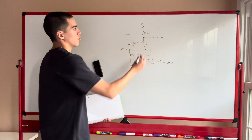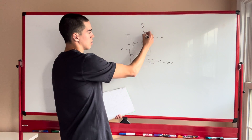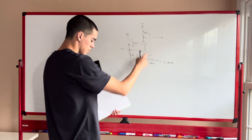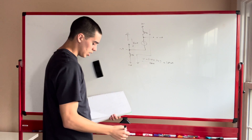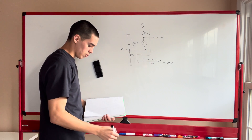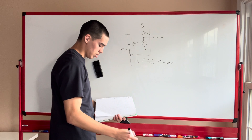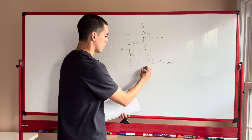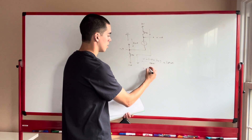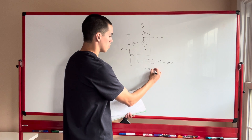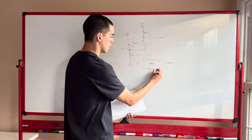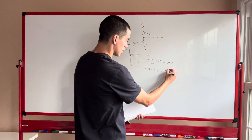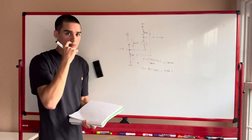So if we're at 10 volts here and we have 1.29 milliamps through the 5-kilohm resistor, the voltage at that node is 10 minus 5 kilohms times 1.29 milliamps, which gives 3.56 volts.